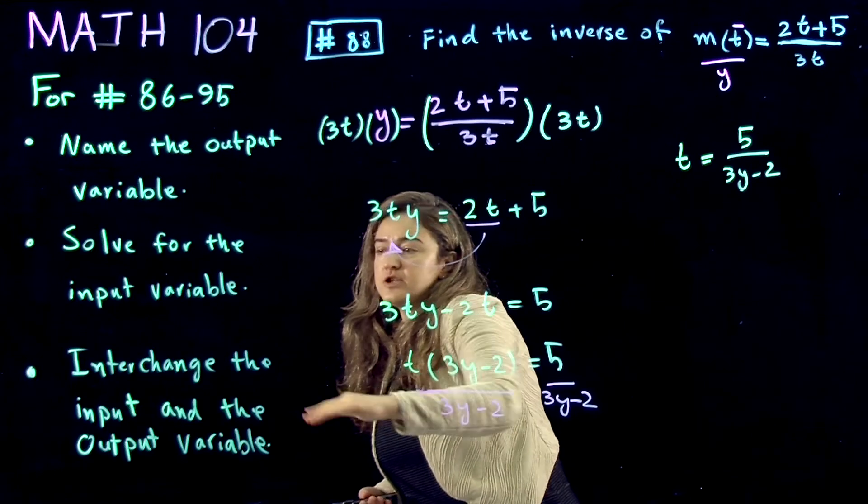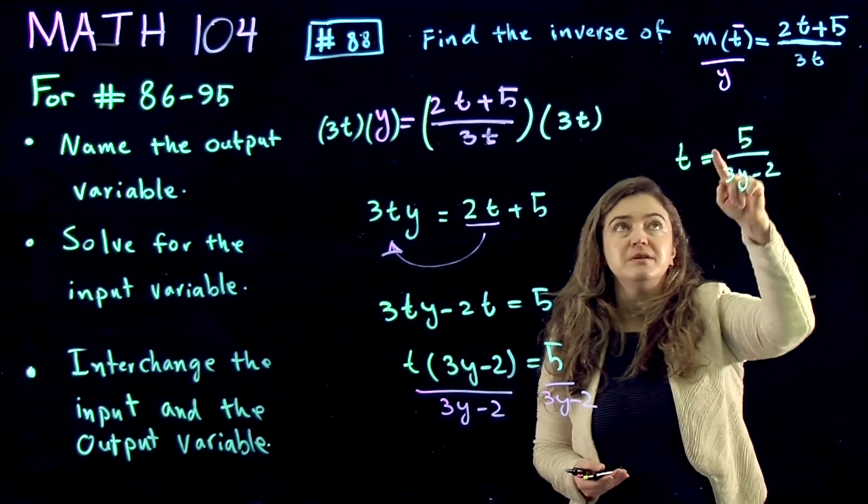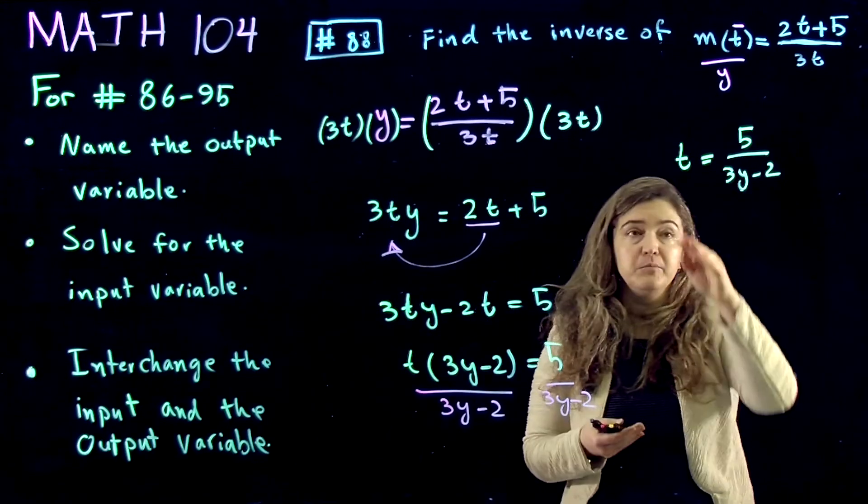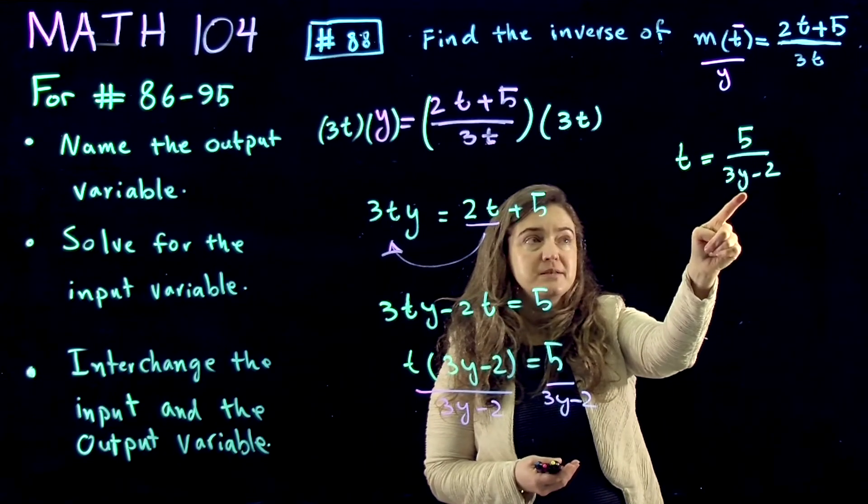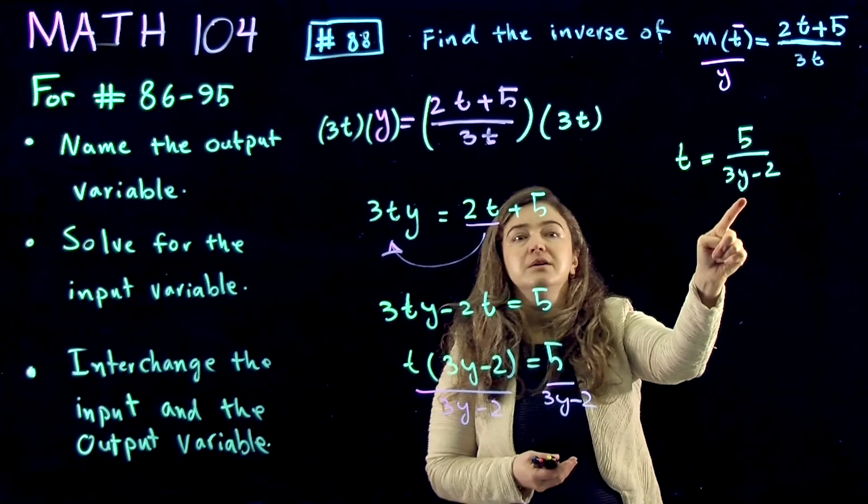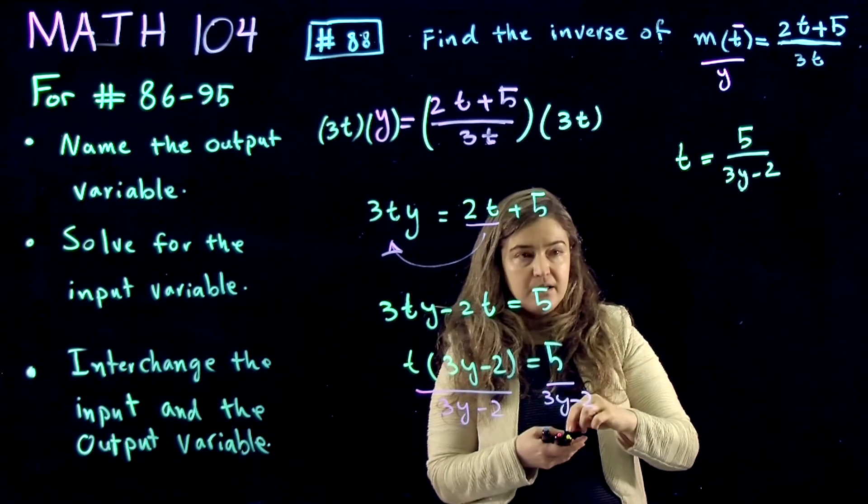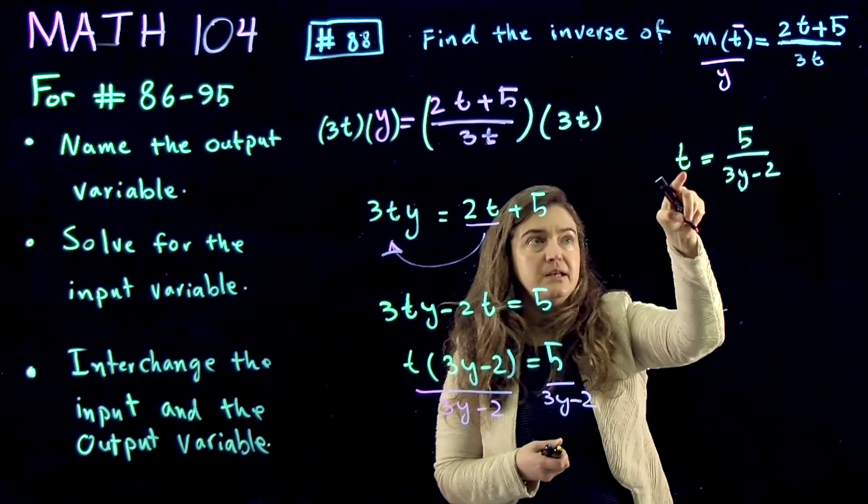The last part is to interchange the input and output in here. Input and output variable. So wherever you see t, you want to replace with y. Wherever you see y, you want to replace with t.